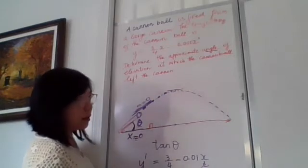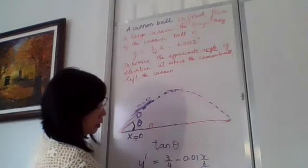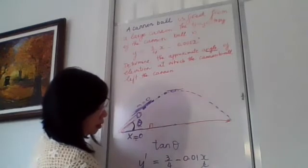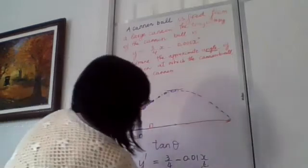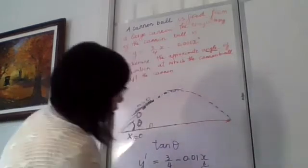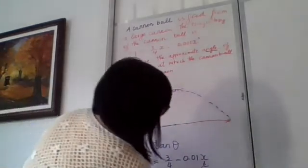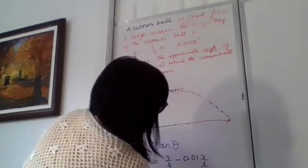So what does theta equal? In the calculator, hit the tan inverse button, right? 3 over 4, we get the angle theta will be equal to about 36.86 degrees. Round off becomes 37 degrees.